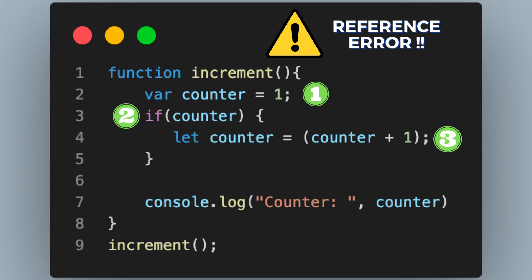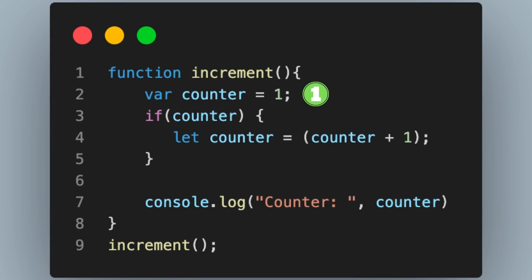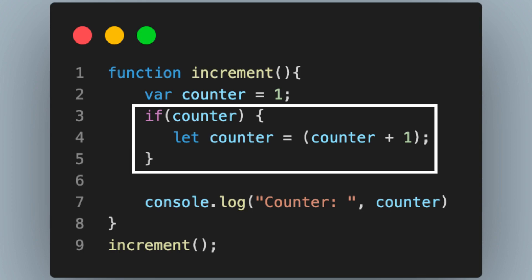But we had defined our variable counter at the first step itself — there was no way the variable was in a temporal dead zone. The reason for the error is lexical scoping. Due to lexical scoping, the counter variable declared using the var keyword is not available inside the if block. Inside the if block, we have a new counter variable — the one declared using the let keyword. The counter plus 1 statement throws an error because the declaration and initialization of the let statement was not yet finished, meaning the counter variable inside the if block is still in the temporal dead zone. JavaScript is still playing by the rules.